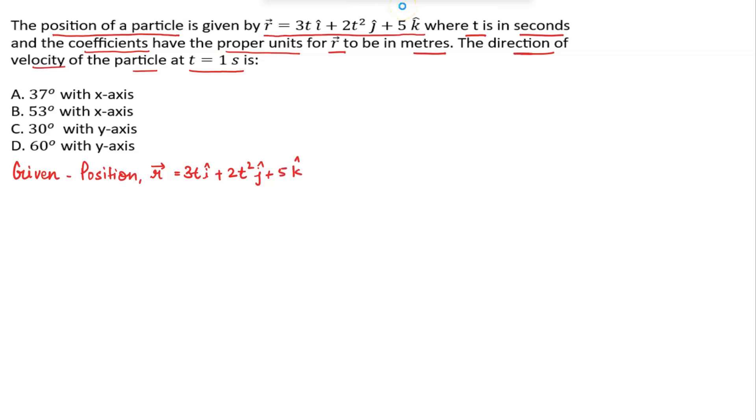To find the direction of velocity, first we calculate the velocity which is given by v vector equals differentiation of position with respect to time. So here we can write dr by dt of position r is given as 3ti cap plus 2t squared j cap plus 5k cap.